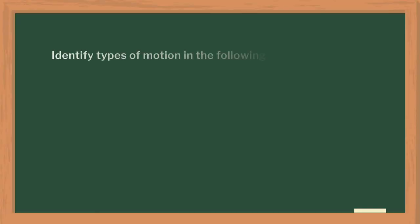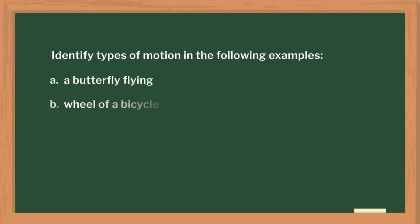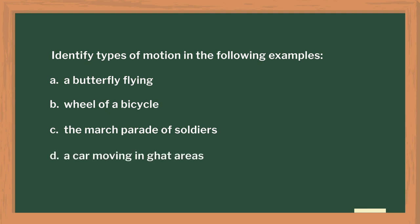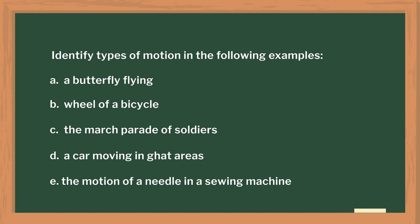I closed the session with the following questions: Identify the types of motion in these examples — a butterfly flying, wheels of a bicycle, the march parade of soldiers, a car moving in ghat areas, and the motion of the needle in a sewing machine. Students answered very confidently and took part in discussion. It was fun to teach students with hands-on activities — I found hands-on activities are more effective. There are many activities related to this topic. The link for a detailed lesson plan is given in the description box. Thank you for watching.